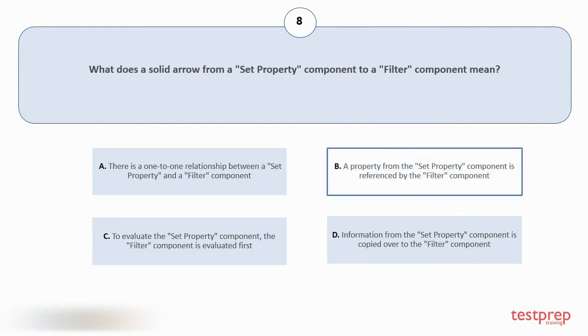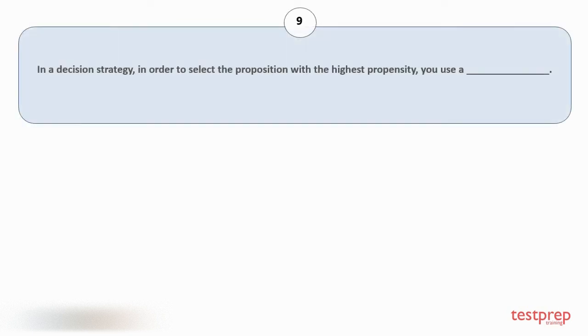Question number nine: In a decision strategy, in order to select the proposition with the highest propensity, you use a —